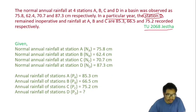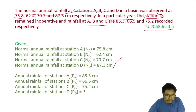The normal annual rainfall at stations A, B, C and D are 75.8, 62.4, 70.7 and 87.3 cm respectively. The annual rainfall recorded at stations A, B and C in that particular year are 85.3, 66.5 and 75.2 cm respectively. We have to calculate the annual rainfall at station D for that particular year.